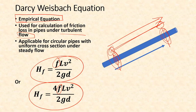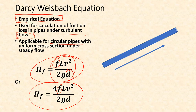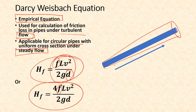For laminar flow we have already derived the Hagen-Poiseuille equation in a previous semester. The Darcy-Weisbach equation is generally used for turbulent flow, but a modified form can be used for laminar flow as well. It is applicable only for circular pipes in its current form; for rectangular, square, or other cross-sections, the diameter must be replaced with another term. It is also valid only for uniform cross-section pipes under steady flow.